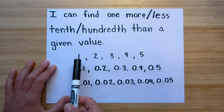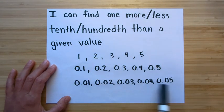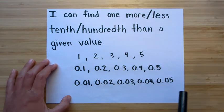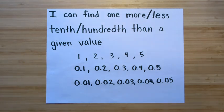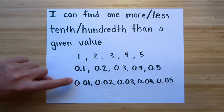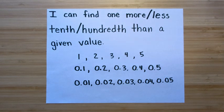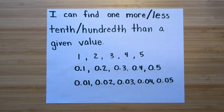So as you can see, the sequencing — one, two, three, four, five — is the same. It's just that the place value is different, so the value is different. These are whole numbers (ones), these are tenths, and these are hundredths. But the counting sequence is still the same; it's just the number is in a different place value, which changes its value.